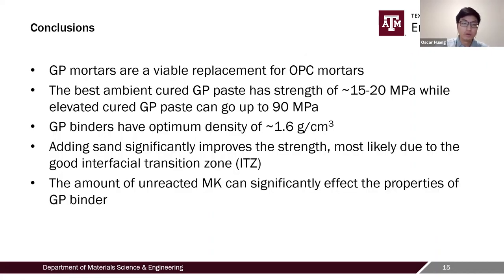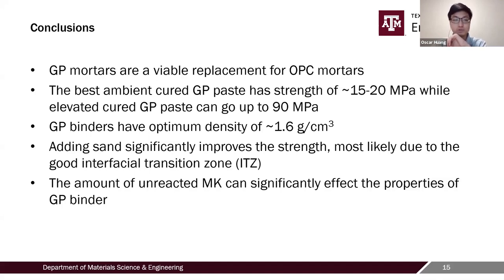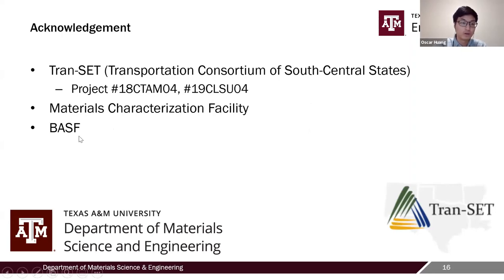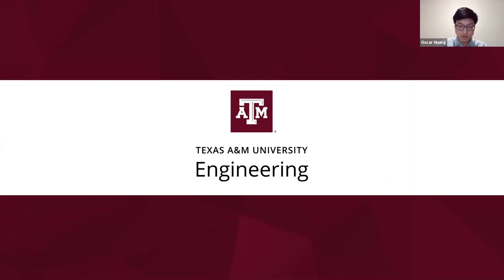To conclude: we believe geopolymer mortars are a viable replacement for Portland cement mortars. The best ambient-cure geopolymer paste achieves 15–20 MPa, while elevated-cure paste can reach up to 90 MPa. Geopolymer binders have an optimum density of roughly 1.6 g/cm³. Adding sand significantly increases strength, most likely due to a good ITZ, and the amount of unreacted metakaolin significantly affects binder properties. We acknowledge Transet for the grant, the Materials Characterization Facility at Texas A&M for SEM equipment, and BSF for providing the metakaolin. Thank you.